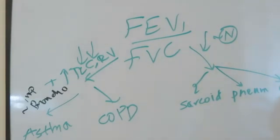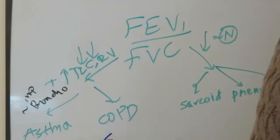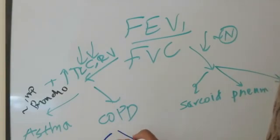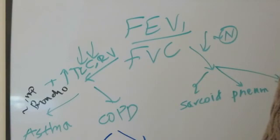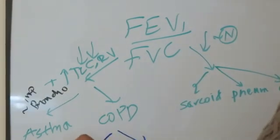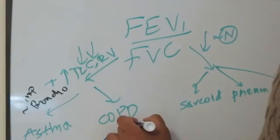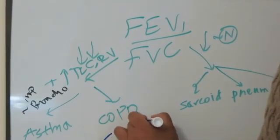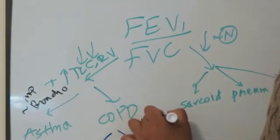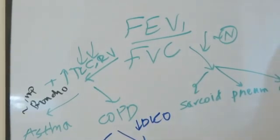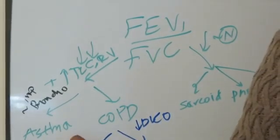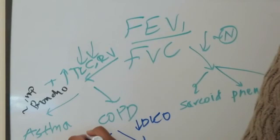COPD is divided between bronchitis and emphysema. Emphysema is going to have an abnormal or decreased DLCO because of destruction of alveoli, and bronchitis will have a normal DLCO.